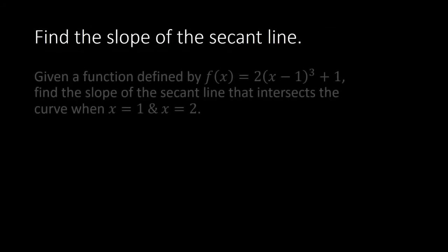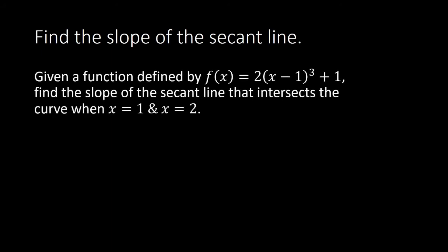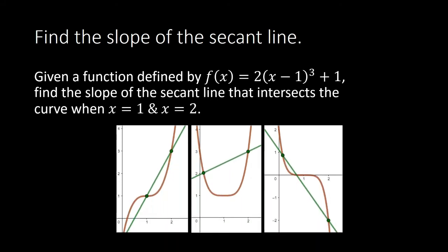Find the slope of the secant line. Given a function defined by f of x is equal to 2 times x minus 1 cubed plus 1, find the slope of the secant line that intersects the curve when x is equal to 1 and when x is equal to 2. We need to produce two points, but what we are given here are only the x coordinates. So we need to produce the y coordinates of the points of intersection between the secant line and the graph of the function, which means we need to compute the coordinates of those points before we can compute the slope.